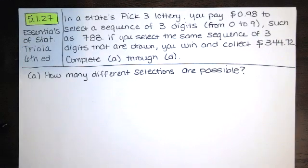In this video, we solve problem 5.1.27 from Essentials of Statistics, 6th edition by Mario Triola. The problem statement says, in a state's Pick 3 lottery, you pay $0.98 to select a sequence of three digits, from 0 through 9, such as 788.